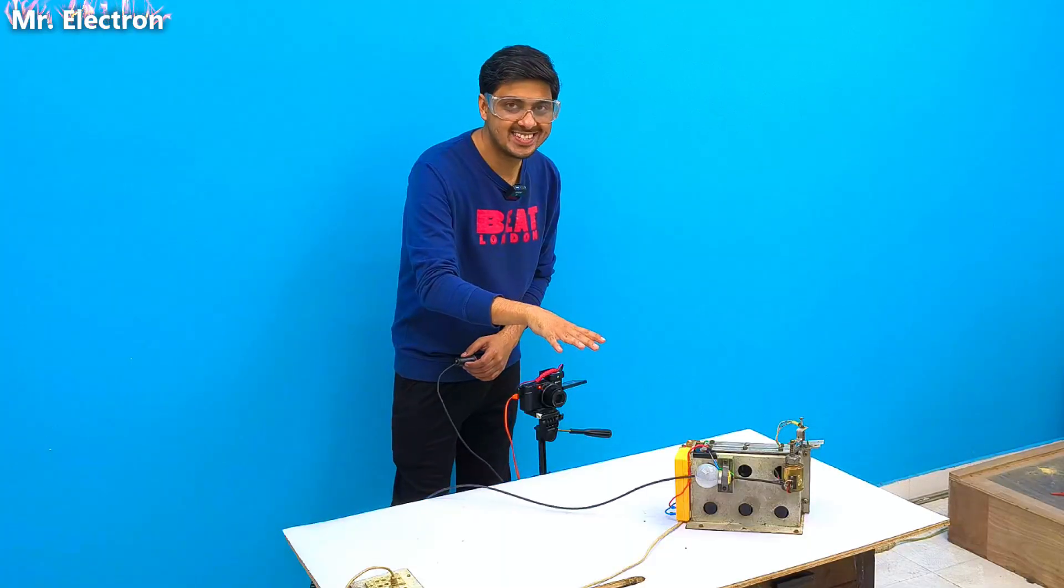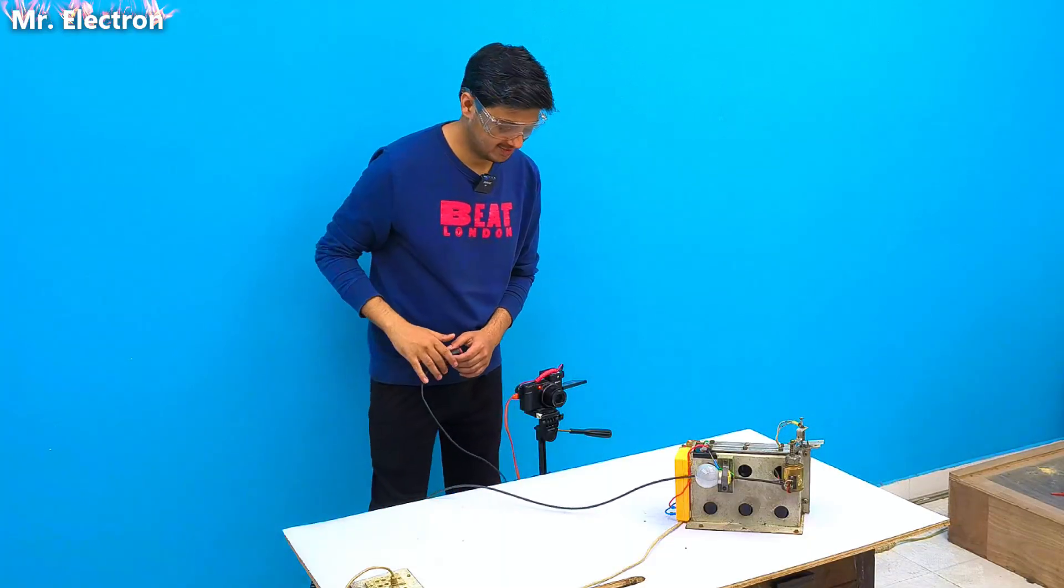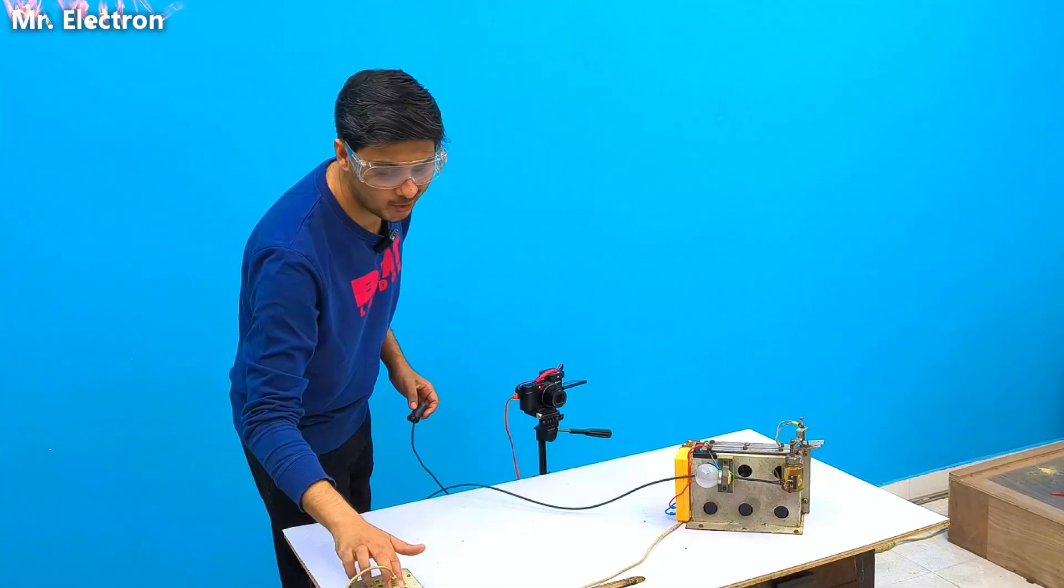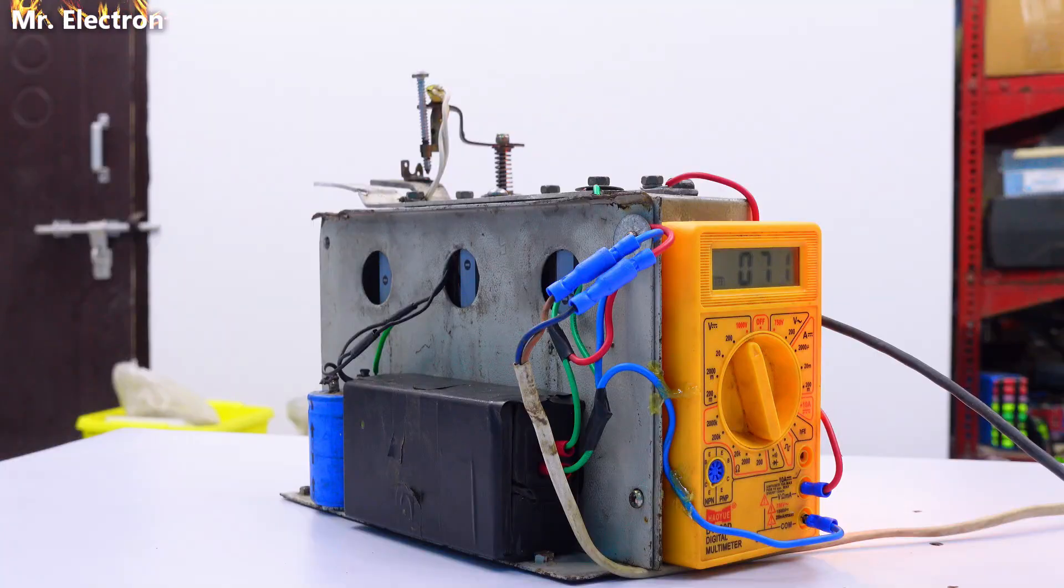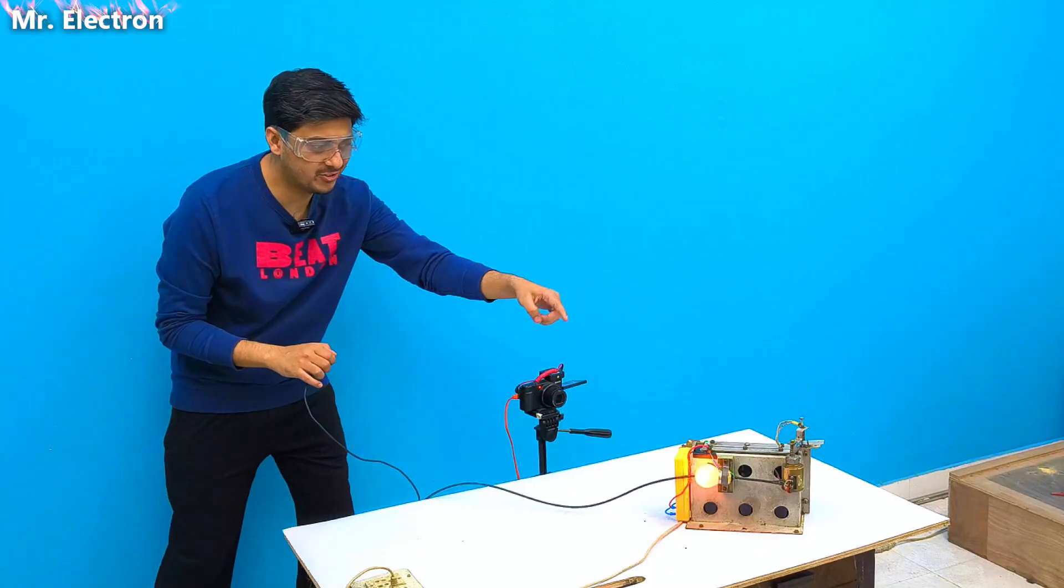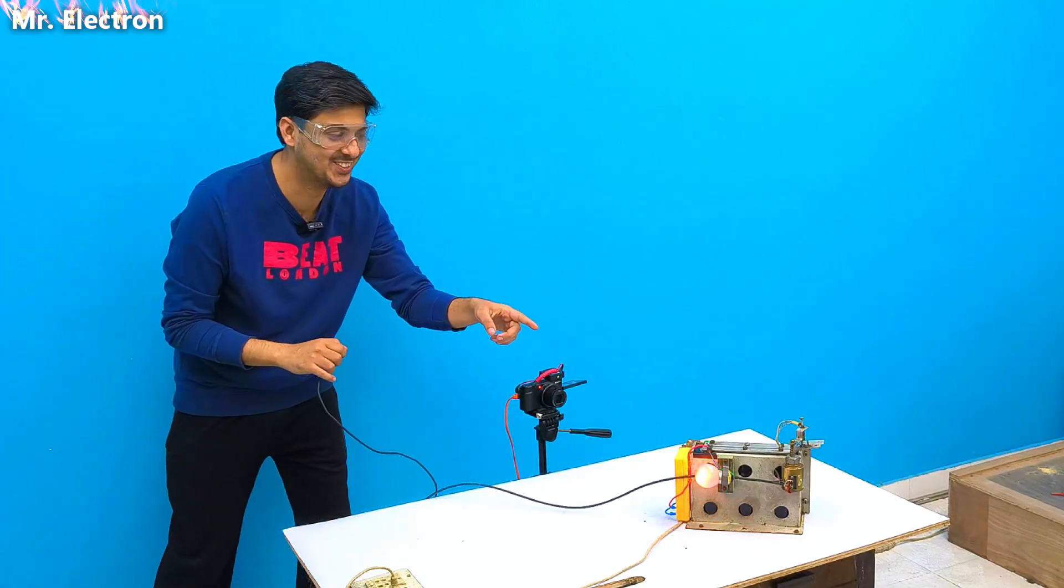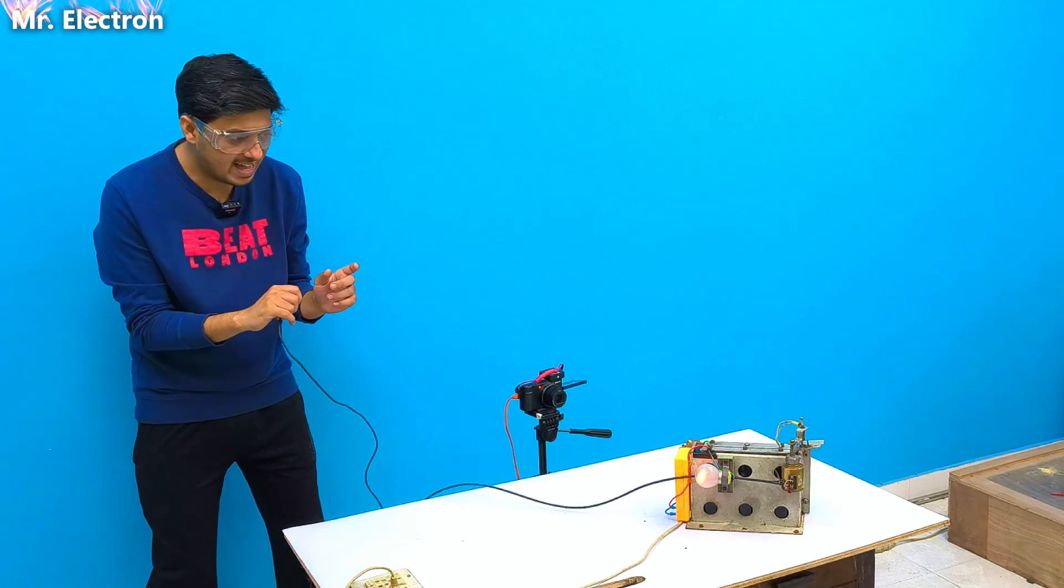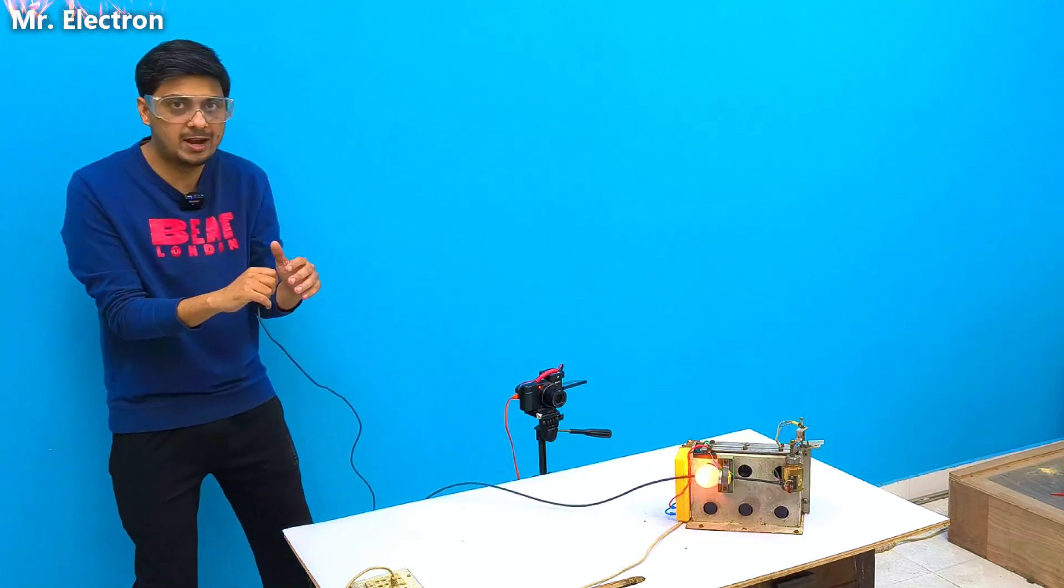So guys, now I'm going to test it at full potential. So let's start the charging. The bulb will start glowing. And here, the voltage is rising. Actually, I don't get it why there is so much spark. You see, it is very dangerous. Why that is happening? I don't understand.